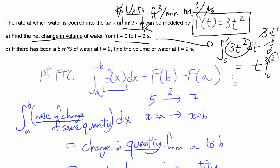And you're going from time of 0 to 2. At time of 2, you have 8. At time of 0, you have 0. So the change is 8. And the unit is cubic meters. So that's our solution to the first one.